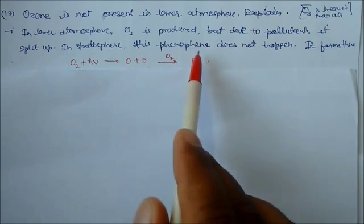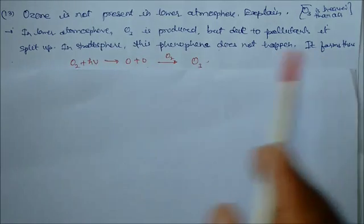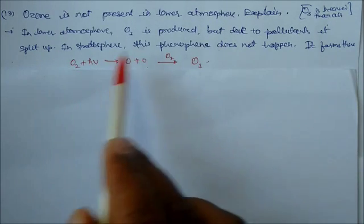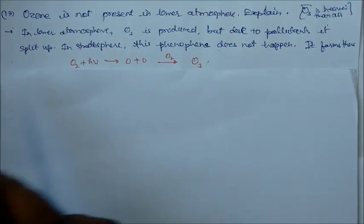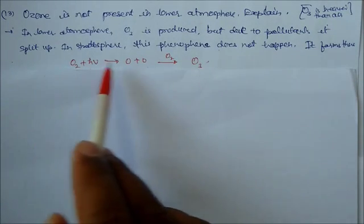This oxygen is reacting in the presence of sunlight, converting into nascent oxygen. This nascent oxygen combines with O2 and forms ozone.